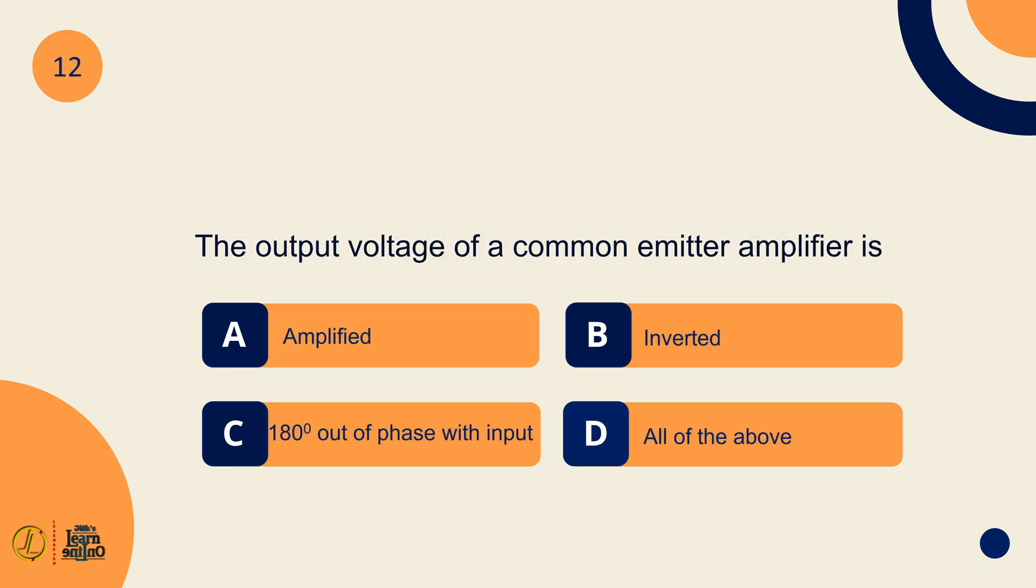The output voltage of a common emitter amplifier is all of the above.